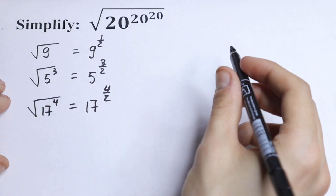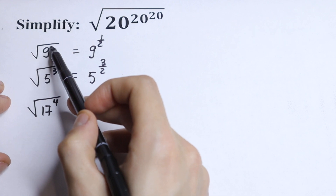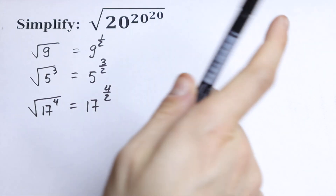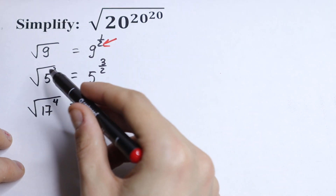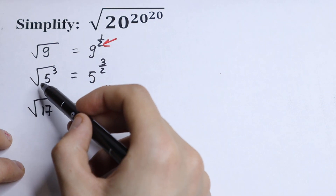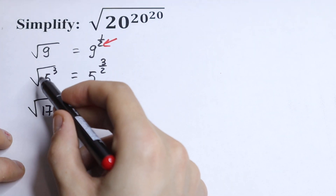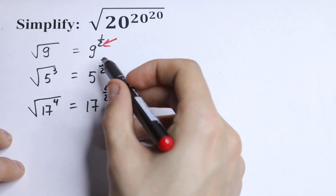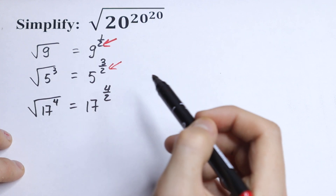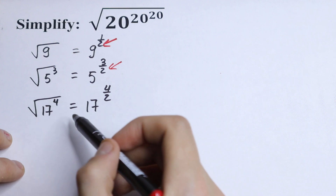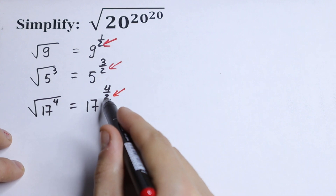So why do I write this? As you can see, our square root sign divides the power of 9 by 2 — so we have 2 right here. Our square root sign divides our power by 2. The square root of 5 cubed gives us 5 to the power 3 over 2, and the square root of 17 to the power 4 gives us 17 to the power 4 over 2. Our square root sign divides our power by 2.